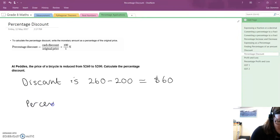Then to work out the percentage discount, what is the percentage discount? If we look up above here, what we do is we put the discount amount on the top,